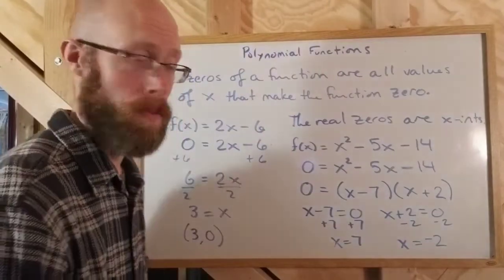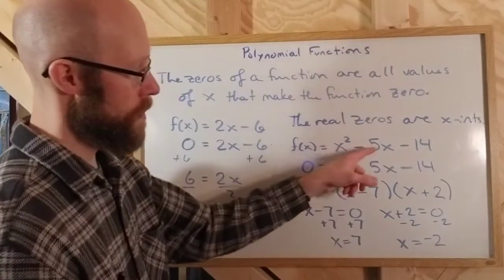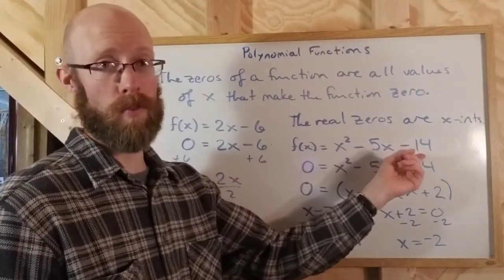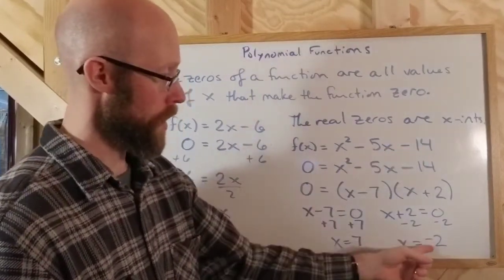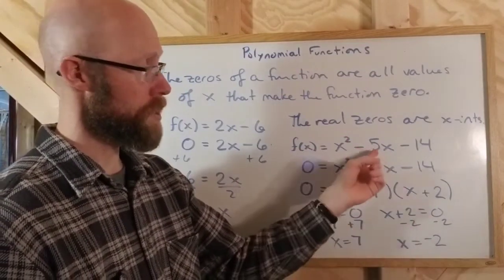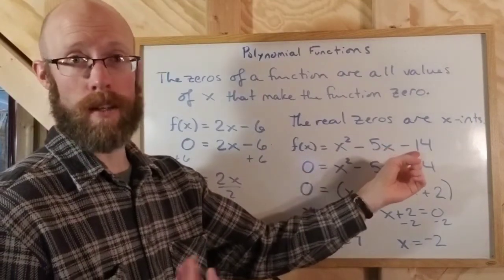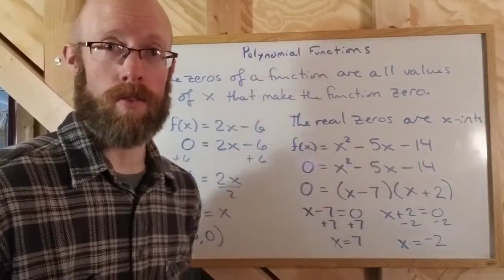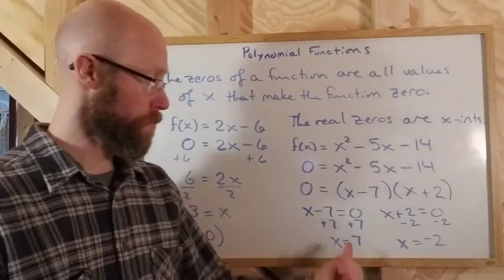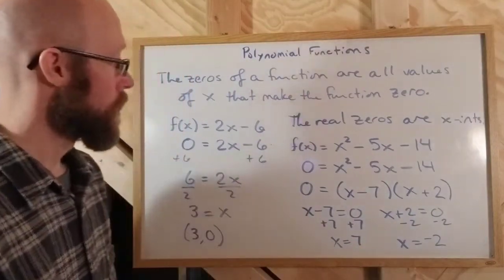Then we set each factor equal to zero, because in order for their product to be zero, at least one of them individually has to be zero. Solving gives us x = 7 and x = negative 2 — those are the zeros of the polynomial. You can always check by plugging them in: 49 - 35 - 14 = 0, and 4 + 10 - 14 = 0. So there are two x-intercepts on this graph, at x = 7 and x = -2.